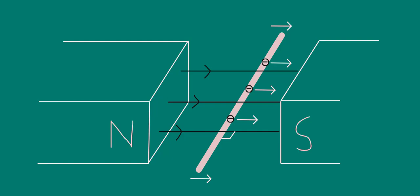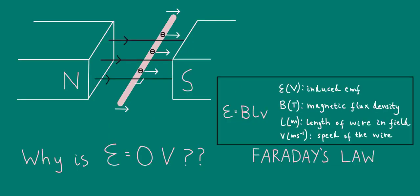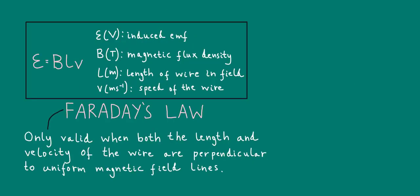Now you may be wondering about Faraday's law. B, L, and V are all finite. None of them are zero. So how come we're saying that the induced EMF is zero? What you need to remember is that Faraday's law is only valid when both the length and velocity of the wire are perpendicular to the field lines of a uniform magnetic field.